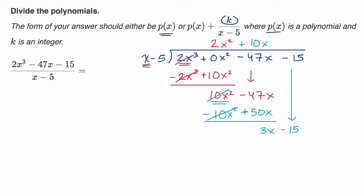All right. X goes into 3x how many times? It goes three times. Three times negative five is negative 15. Three times x is 3x.